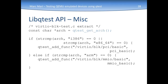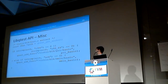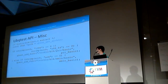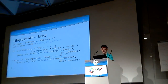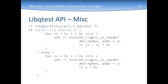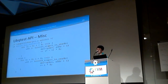Finally, in LibQTest there are functions such as get_architecture to get the actual architecture that is running, which will return a string like ARM, x86_64, or i386, depending on the architecture the test is running. And one that was merged recently is qtest_big_endian to check if the guest is big-endian or little-endian.